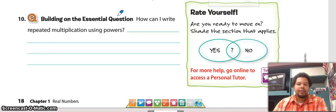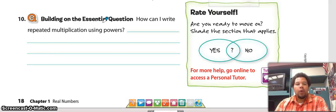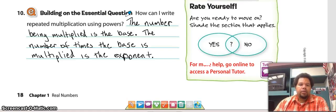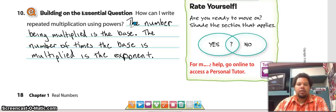Building in the essential question: how can I write repeated multiplication using powers? The number being multiplied is the base, and the number of times the base is multiplied is the exponent. That's how we can write repeated multiplication using powers.